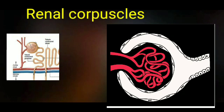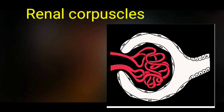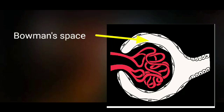The rounded and expanded end of the nephron forms the renal corpuscle, which consists of two parts: number one, the glomerulus, and number two, Bowman's capsule. Bowman's capsule shows an outer parietal epithelium and an inner visceral epithelium. The space between these two layers is called Bowman's space.